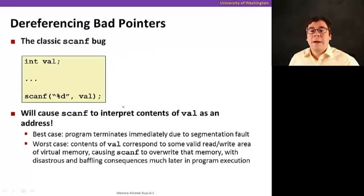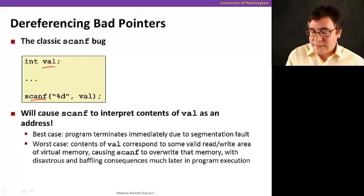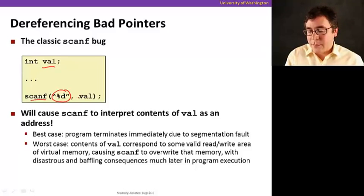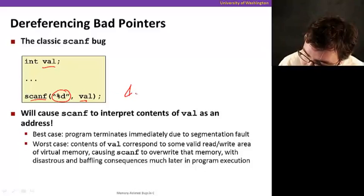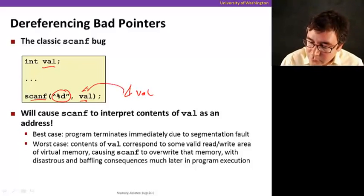So let's start with dereferencing bad pointers. So here's what's happening here. We declare a variable val, and we call scanf, which just reads something from input and stores it in val. But what we're supposed to have done here is to have passed the address of val to scanf as opposed to val.